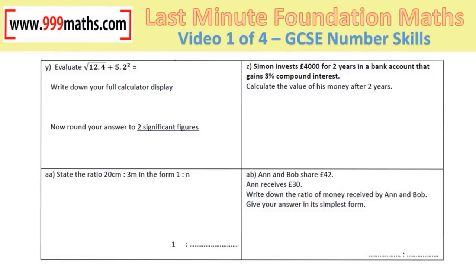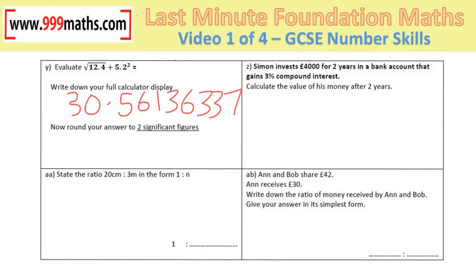The word 'evaluate' just means work out the answer. Type it into your calculator in exactly the same format as the question — be careful not to include too much under the square root or square the wrong part. Done correctly, you get 30.5613637. To 2 significant figures: the 5 rounds it up, giving a final answer of 31.